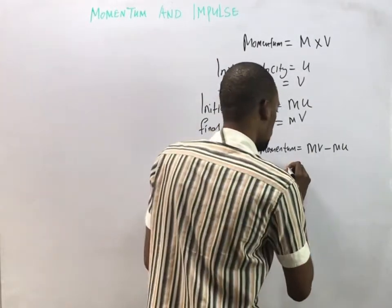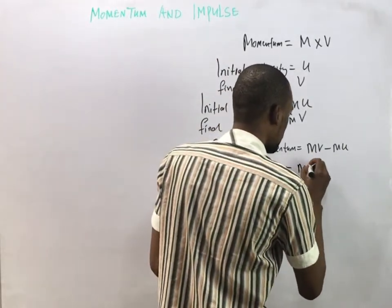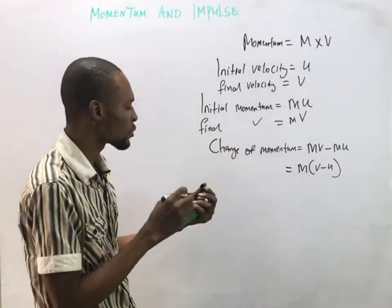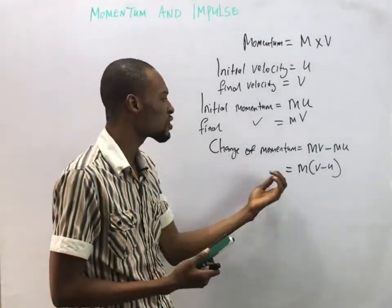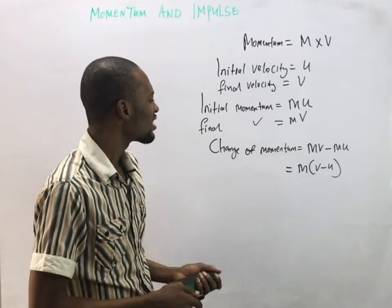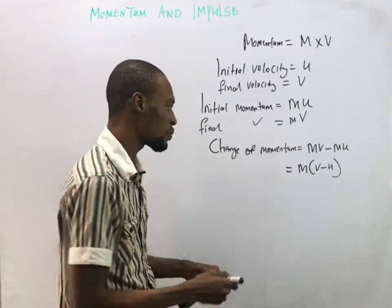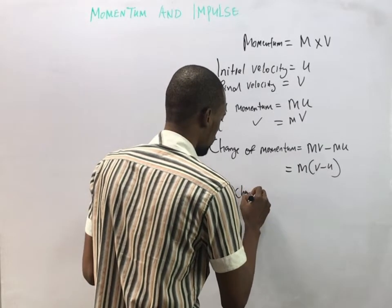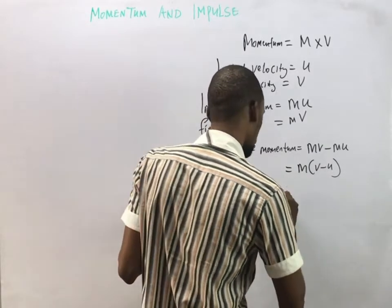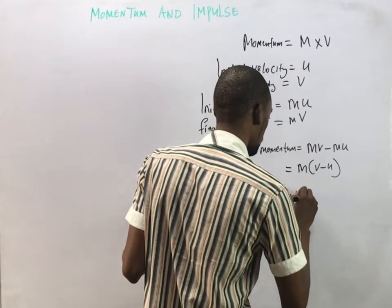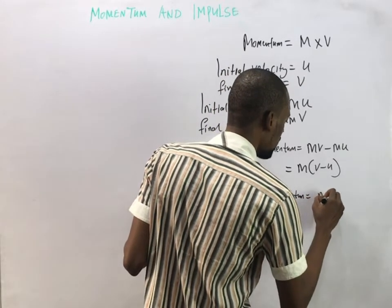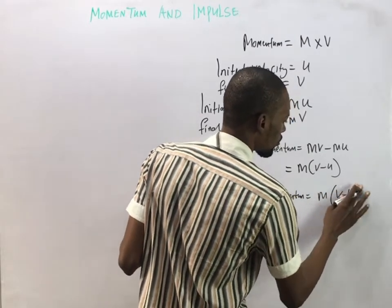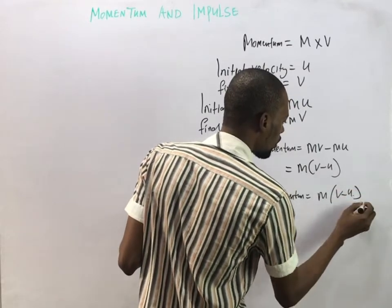Bringing out the mass, the change in momentum becomes m(v - u). Momentum can change with time, so the rate of change of momentum is m(v - u) divided by time t.